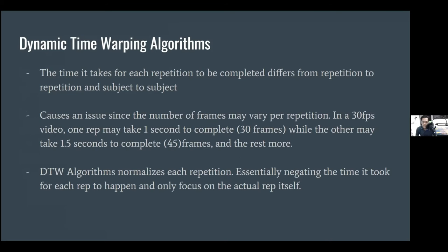For the dynamic time warping algorithm, the time it takes for each repetition to be completed differs from repetition to repetition and from subject to subject. Each repetition in a set usually differs — the first repetition may take one second, but the second repetition may take one and a half seconds, and the third repetition may take two seconds. This normally happens within a set and from subject to subject.